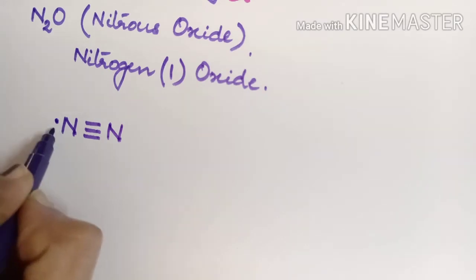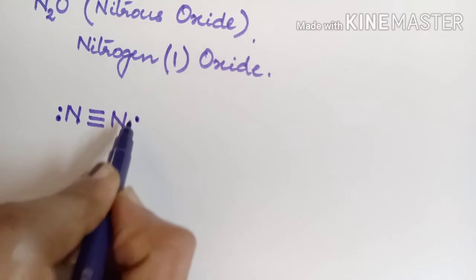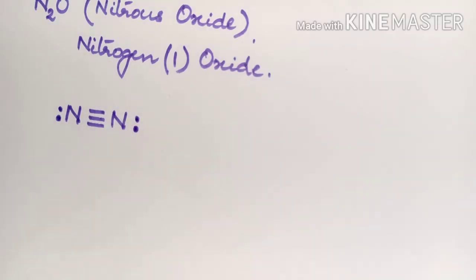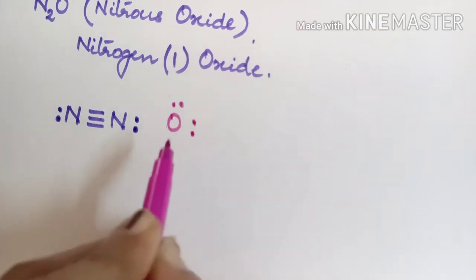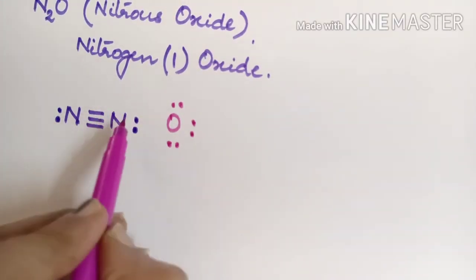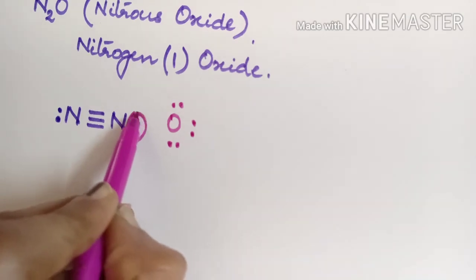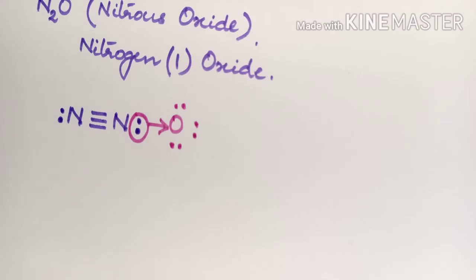A lone pair is present on one nitrogen; the second also carries a lone pair. When combining with oxygen, oxygen has six electrons in its valence shell, so the only possibility here is forming a coordinate bond. The coordinate bond can be rewritten as a single bond with charge separation.